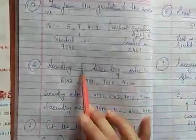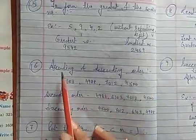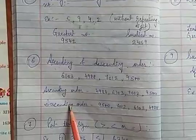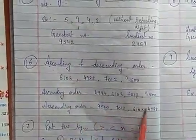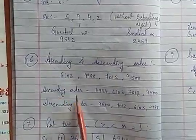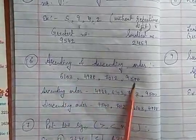Now next is ascending and descending order. Ascending order means smaller to bigger and descending order means bigger to smaller. So I have written here one example and we will write ascending order.